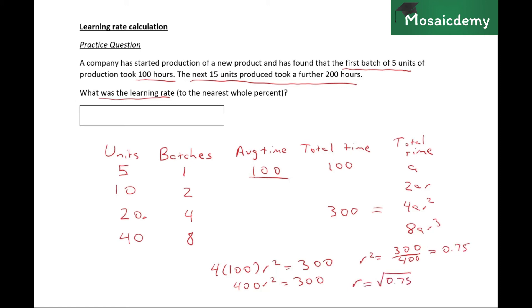So you can use your calculator. They want it to the nearest whole percent. If you calculate, you should get something close to around 87%, right? So the answer here would be 87%.